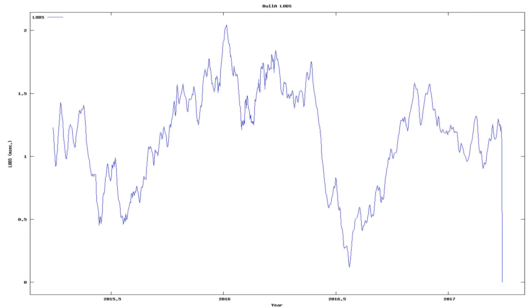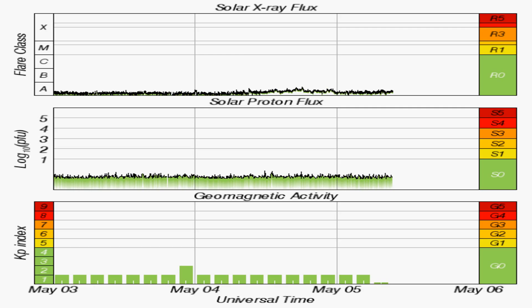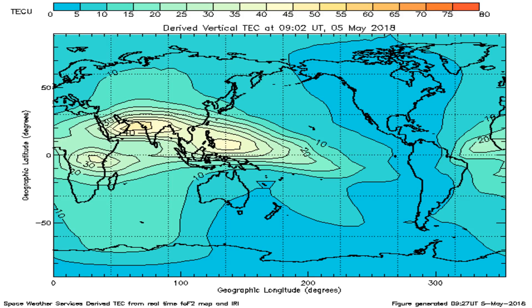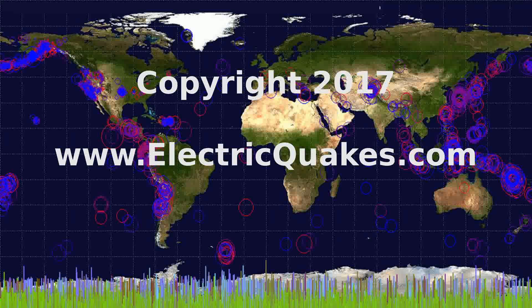And now we see changes in the speed of the rotation of the Earth, along with solar x-ray flux, solar proton flux, geomagnetic disturbances, and another graph of total electron content across the Earth. That's the report for today. Please remember to like and subscribe and visit our Patreon at Geopilot. Thank you.